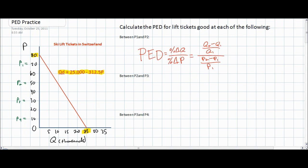To calculate the price elasticity of demand we must have a few price and quantity combinations to work with. The PED for a particular good measures the responsiveness of consumers to a price change for that good. The PED formula is the percent change in quantity divided by the percent change in price. If we have two prices and two quantities, we can find the PED using the formula: Q2 minus Q1 divided by Q1 gives the percentage change in quantity, and P2 minus P1 divided by P1 gives the percentage change in price.